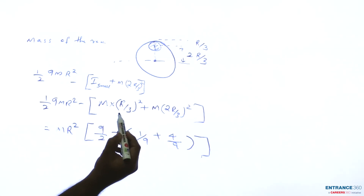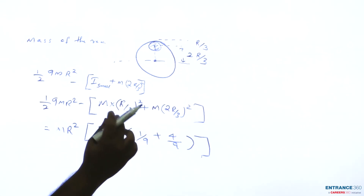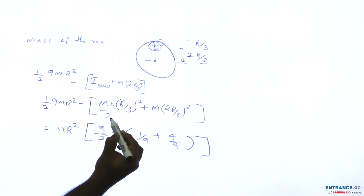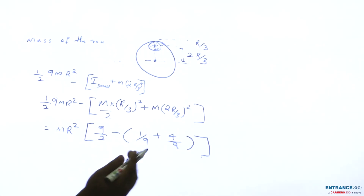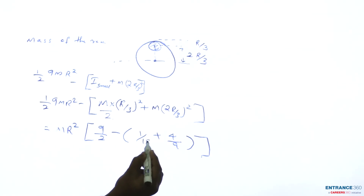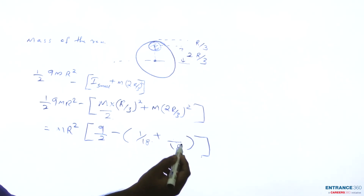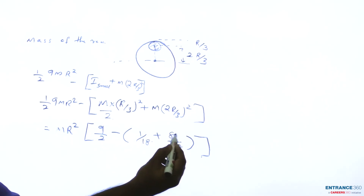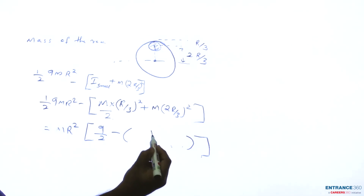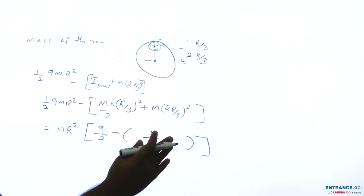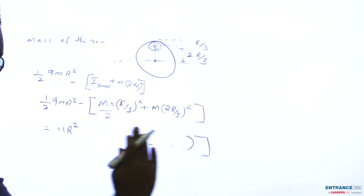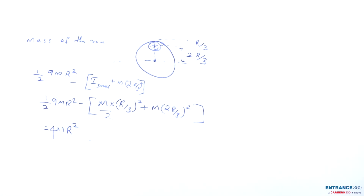Since mr²/2 is factored, the denominator becomes 18. After simplification: 18/2 = 9 on the first term minus (1/9 + 4/9) adjusted accordingly gives 8. So the result is (8/2) × mr² which equals 4mr².